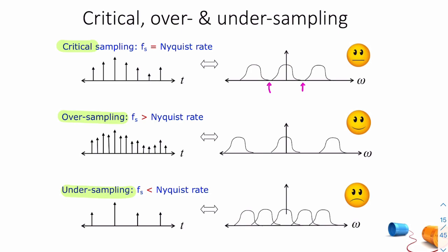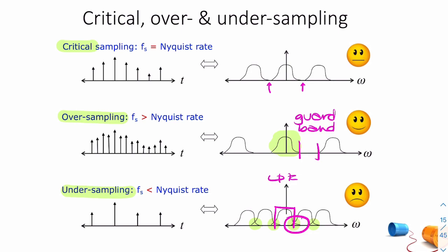Oversampling is when your sample rate is greater than the Nyquist rate. That gives you a guard band between adjacent spectra, which is really useful. It means that when you want to recover your message, you can use a low-pass filter that doesn't have to be a brick wall ideal filter — it can have a roll-off that's more realistic and achievable, using the guard band without picking up anything from the adjacent spectrum. If your sample rate is less than the Nyquist rate, you'll get spectral folding, and even with a brick wall ideal low-pass filter you'd still have distortion — what we refer to as aliasing.